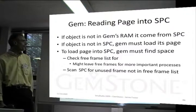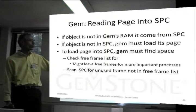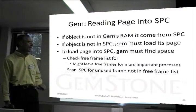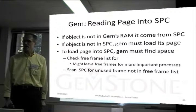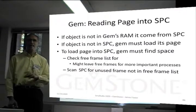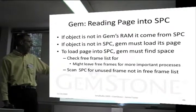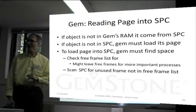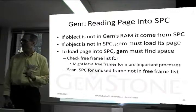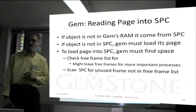If the object is not in the GEM's RAM or local space for that process, it has to come from the shared page cache. If the object is not in the shared page cache, then we have to load the page — we can't just load the object, we have to load the whole page that contains the object. To load the page into the shared page cache, we have to find space in the cache, which is where some of the complications related to the cache and finding-a-frame algorithm come in.